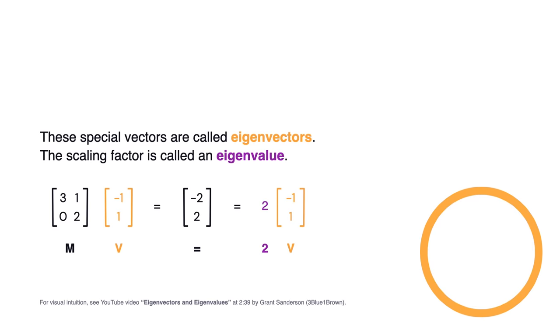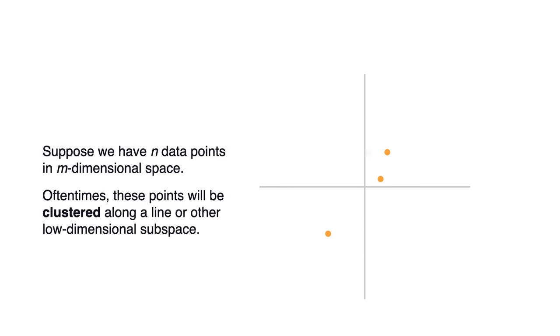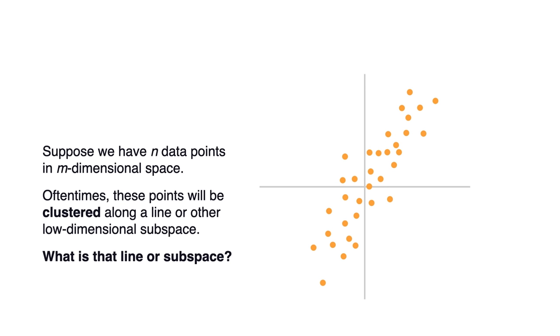In the context of data science and machine learning, eigenvectors also encode valuable information about your data. Let me share one example that ties this into dimensionality reduction. Imagine you have n data points in some m-dimensional space — for simplicity on this slide, m equals two. Oftentimes you'll find that your data points are clustered along a line or some other small-dimensional space, and you'd like to know: what is that line? What is that subspace on which my data is clustered? You want to know this so you can zoom in onto the smaller-dimensional space and focus your resources there.